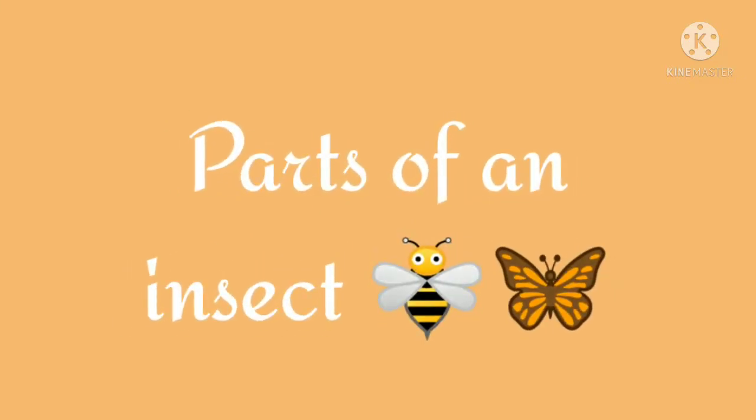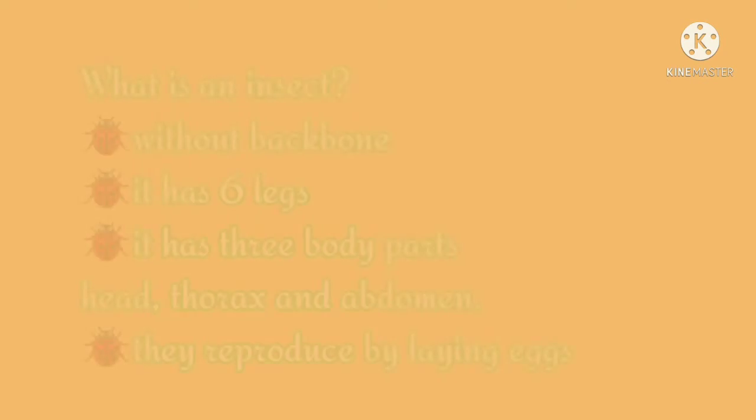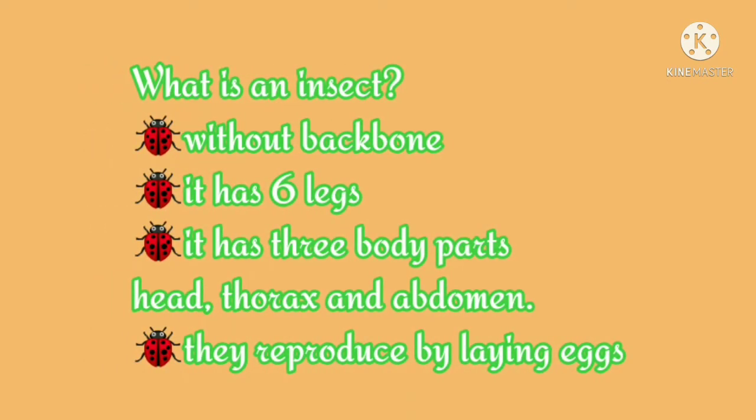Parts of an insect. An insect is an animal without a backbone. It has 6 legs and 3 body parts: head, thorax, and abdomen. They reproduce by laying eggs.